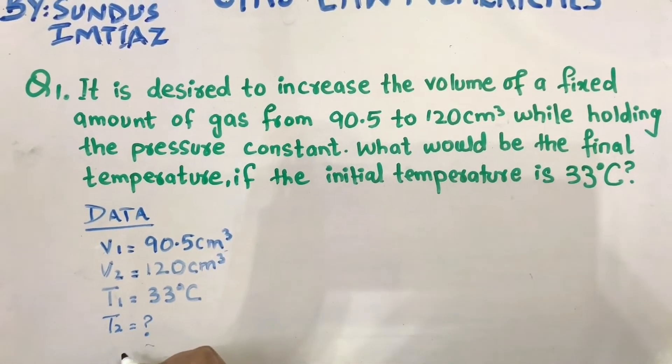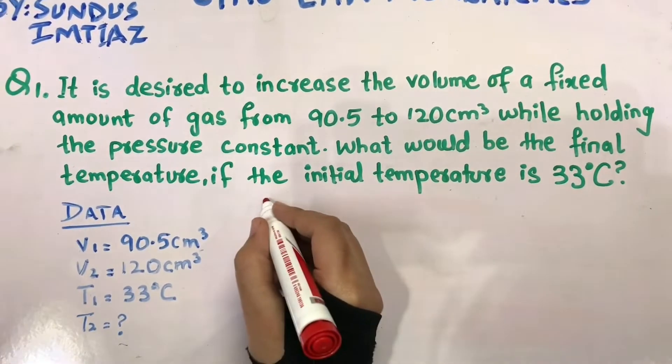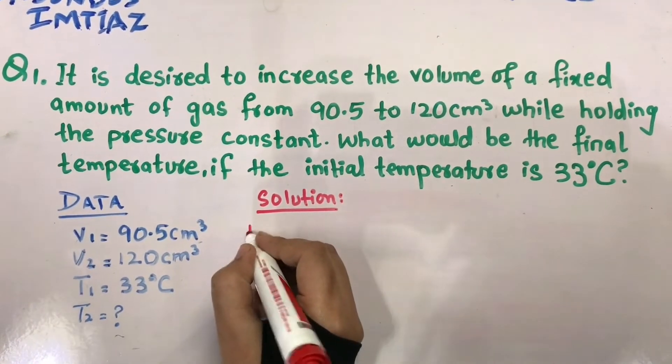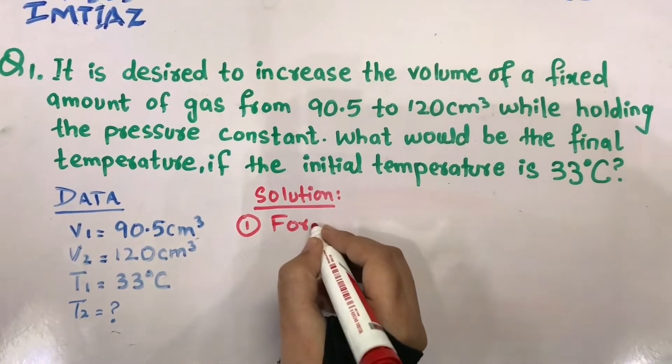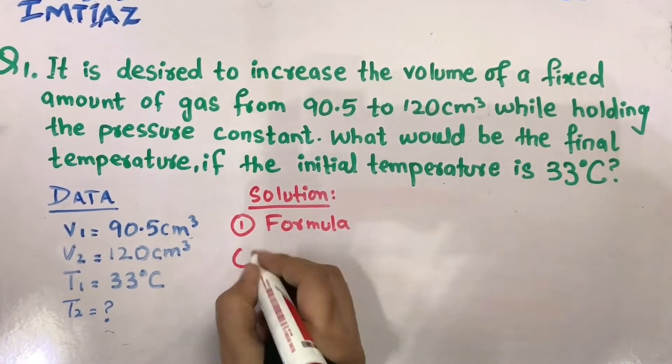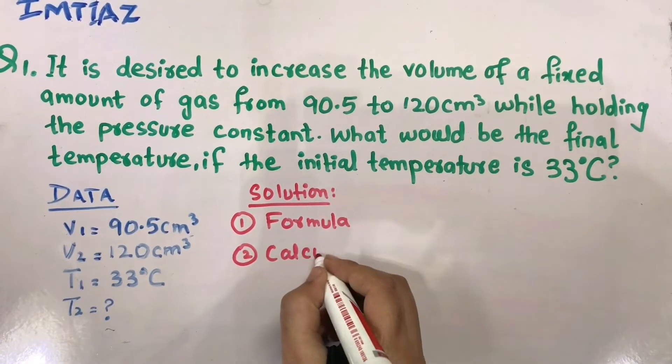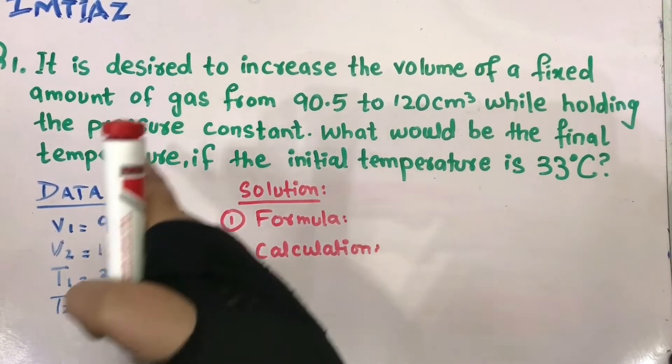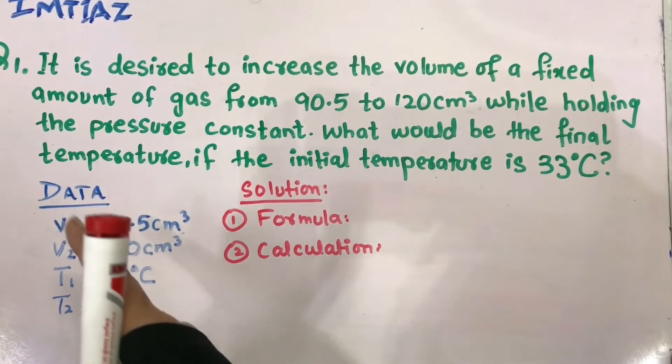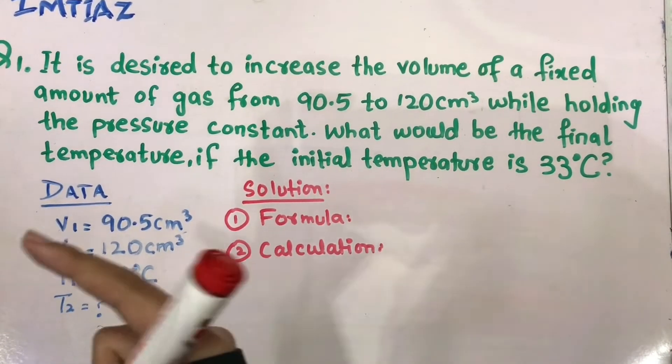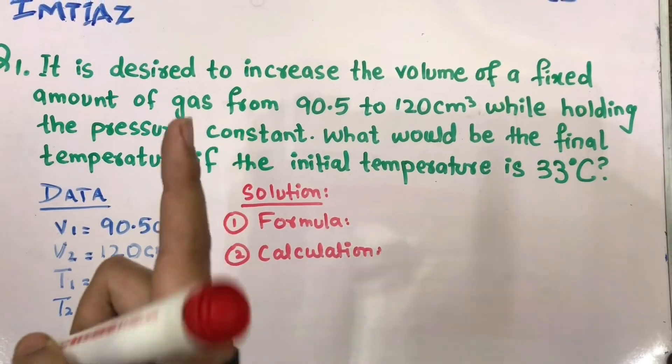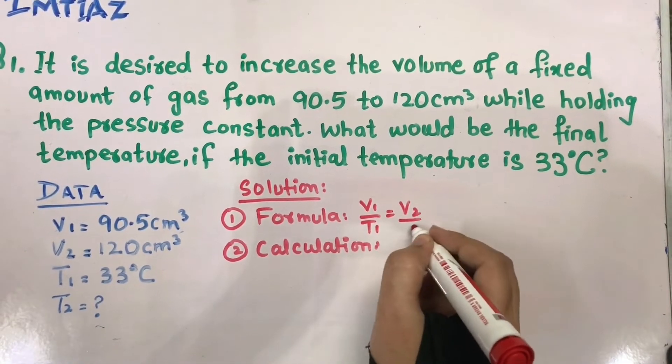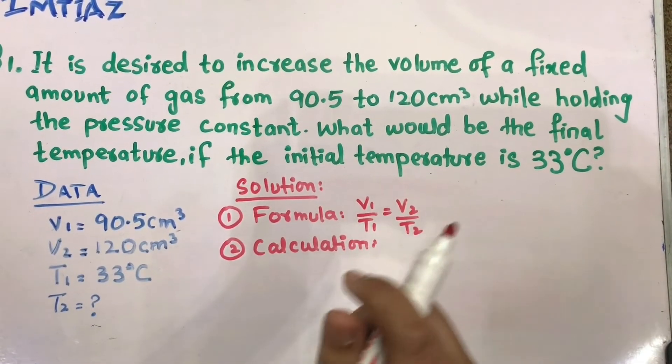Coming to the solution part, we have two headings: first is formula and second is calculation. For Charles's Law, the formula is V1 upon T1 equals V2 upon T2. You have to put the values from the data into this formula.